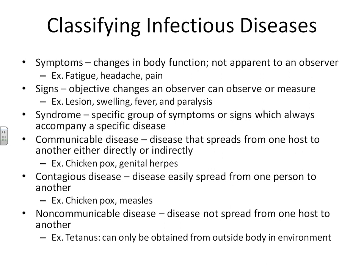Now we'll look at ways to classify infectious diseases. We compare the difference between symptoms, signs, and a syndrome. A symptom is any change in body function or state that you as the sufferer can feel but no one else can observe — like headache or pain. A sign is something both the affected person and an observer can see, such as swelling or redness. A syndrome is the collection of symptoms and signs that we always see when looking at a particular disease.